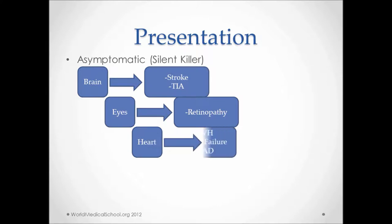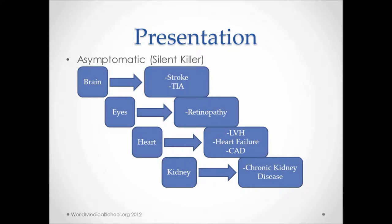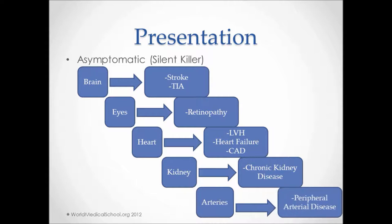In the heart, hypertension can cause left ventricular hypertrophy due to the left ventricle having to work extra hard to push blood out, which can lead to heart failure. Patients with coronary artery disease can also present with hypertension. Hypertension can affect the kidneys as well, causing chronic kidney disease. It can also lead to peripheral arterial disease, which can present as leg pain on walking that goes away with rest, reduced nail and hair growth on the affected limb, and change in color or temperature compared to the normal limb.